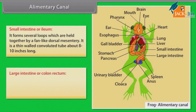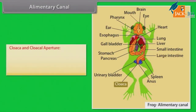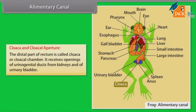The large intestine or colon/rectum is short but comparatively wide, with an inner surface producing longitudinal folds. It is also called the rectum. The distal part of the rectum is called the cloaca or cloacal chamber. It receives openings of the urinogenital duct from the kidneys and of the urinary bladder.